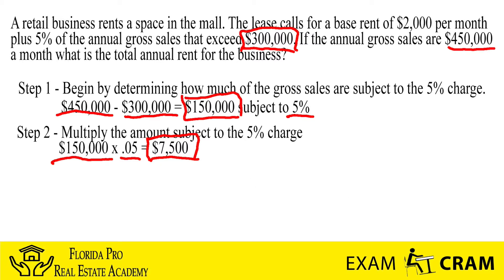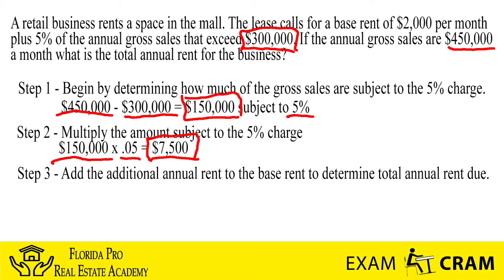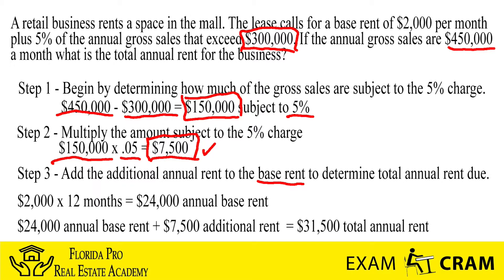In step three, we want to add the additional rent — we know it's $7,500 — to the base rent, and that'll give us the total rent for the year. To get the base rent, we take $2,000 and multiply it by 12, which gives us a total of $24,000. That's your base rent. So if we only had sales of $299,000, we would not have to pay any more than $24,000. Be careful with that on the state exam.